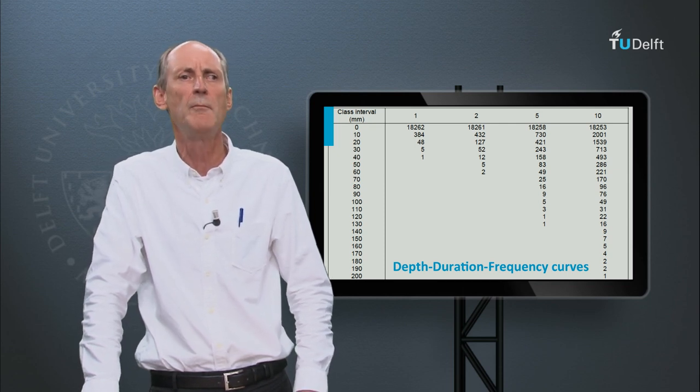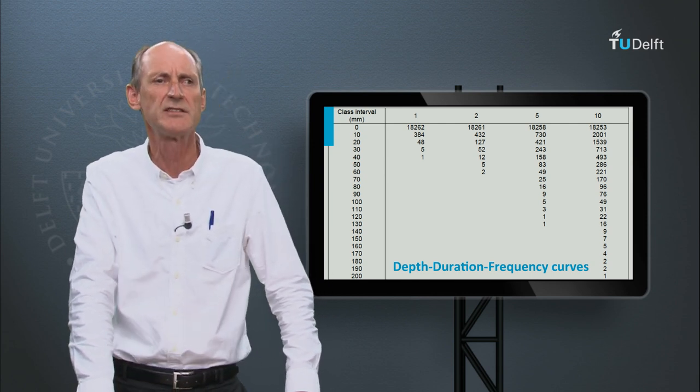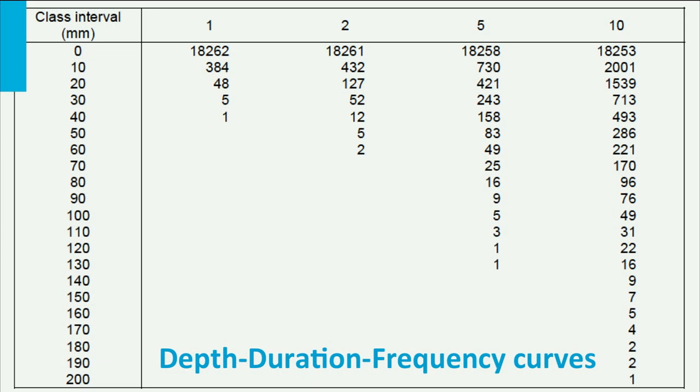You do the same for amounts falling in 2 days, 5 days and 10 days. This results in a table. We see that only once in 50 years the daily intensity exceeds 40 millimeters per day, a probability of 2% on an annual scale. Similarly, an intensity of 30 millimeters per day is exceeded 5 times over 50 years, whereby T is 10. For the 2-day precipitation, 60 millimeters is exceeded 2 times during 50 years, T is 25.